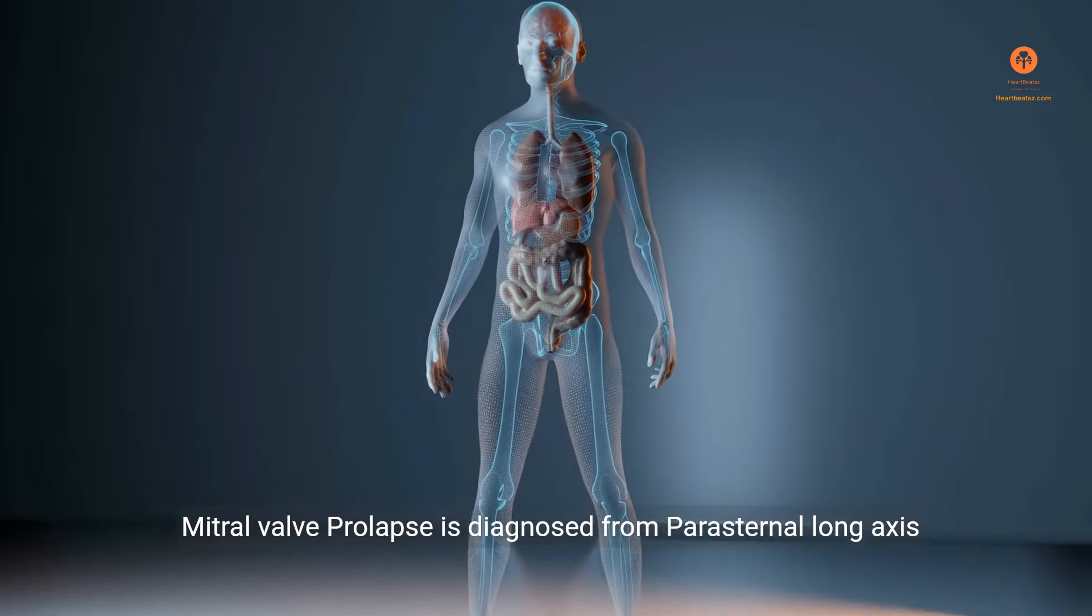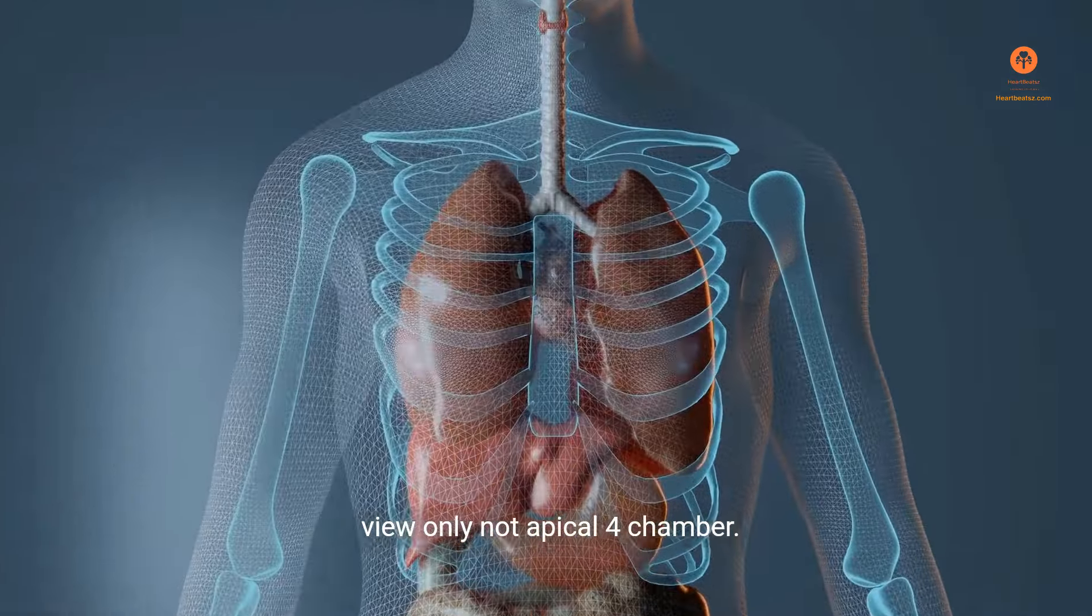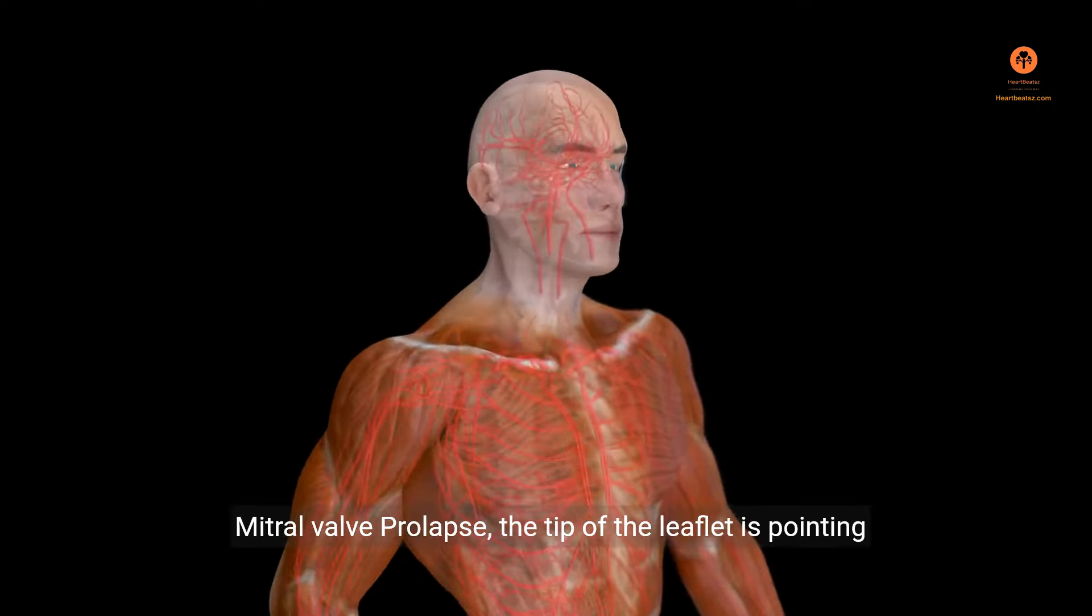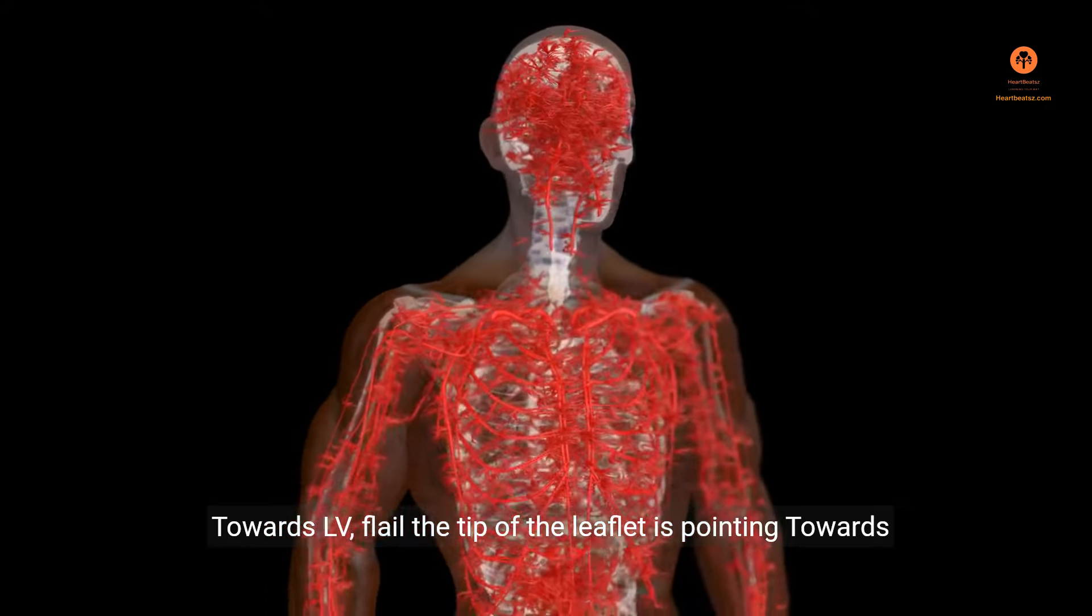Mitral valve prolapse is diagnosed from parasternal long-axis view only, not apical four-chamber. In mitral valve prolapse, the tip of the leaflet is pointing towards LV. In flail, the tip of the leaflet is pointing towards LA.